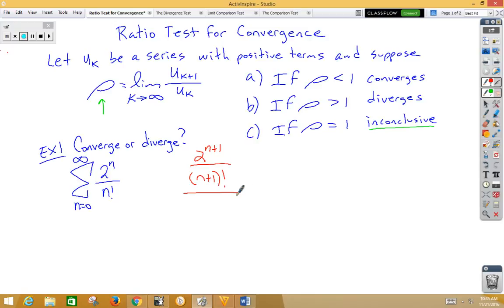Now we want to make a ratio out of that, so we're going to put that over the preceding term, which was 2 to the n over n factorial. And we're looking for the limit as n approaches infinity, and that would be rho.